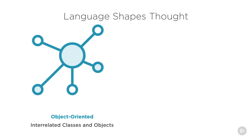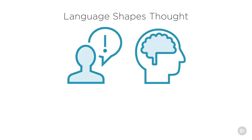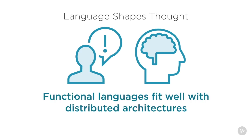A generation of programmers has been trained to conceptualize systems as consisting of interrelated classes and objects. But these days functional programming is coming out of the confines of academia and becoming extremely practical, because functional programming paradigms mesh very smoothly with distributed system architecture. Perhaps the unique appeal of Scala is that it appeals to programmers who have cut their teeth on object-oriented Java, but also gets the job done on distributed systems because of its functional support.